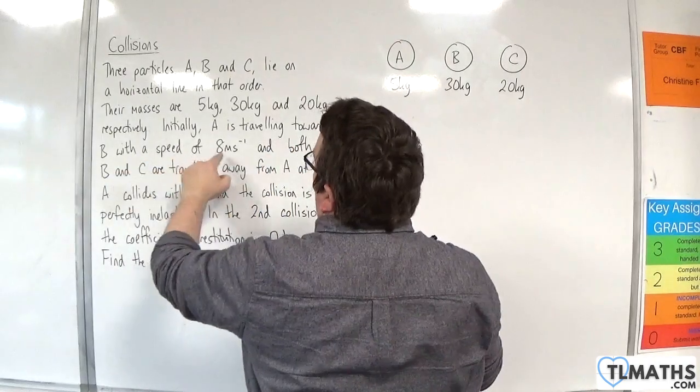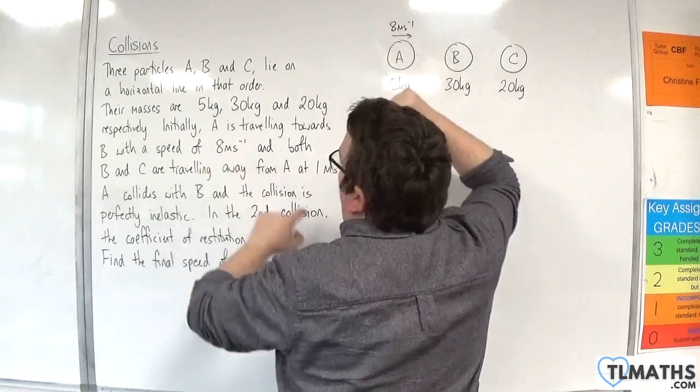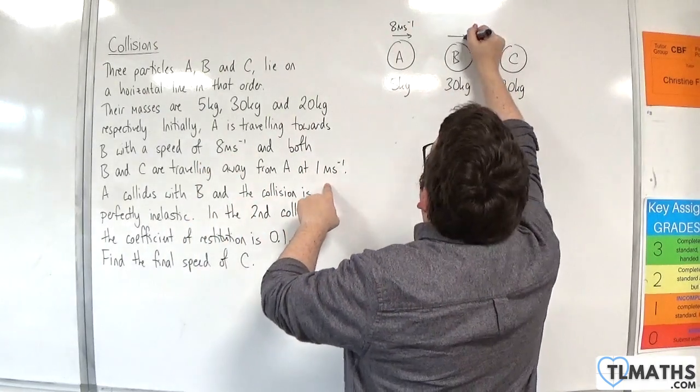Initially, A is traveling towards B with a speed of 8 metres per second. And both B and C are traveling away from A at 1 metre per second.